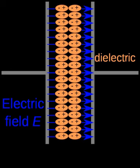When a dielectric is placed in an electric field, electric charges do not flow through the material as they do in an electrical conductor but only slightly shift from their average equilibrium positions causing dielectric polarization. Because of dielectric polarization, positive charges are displaced in the direction of the field and negative charges shift in the opposite direction. This creates an internal electric field that reduces the overall field within the dielectric itself.